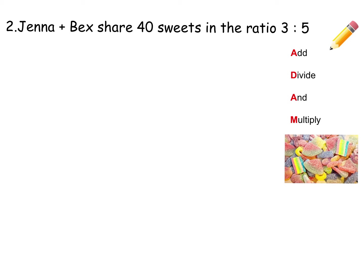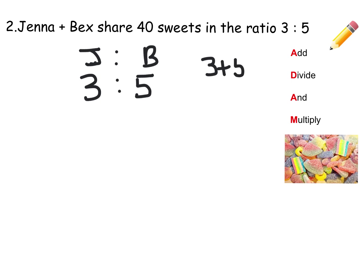This time we're going to share 40 sweets in the ratio 3 to 5 — Jenna and Bex. We're just going to write Jenna and Bex as J to B. They're going to have the sweets in the ratio 3 to 5. First thing we do is add the ratios: 3 plus 5 equals 8. Then we divide the sweets by 8: 40 divided by 8 is 5, meaning one share is worth 5.